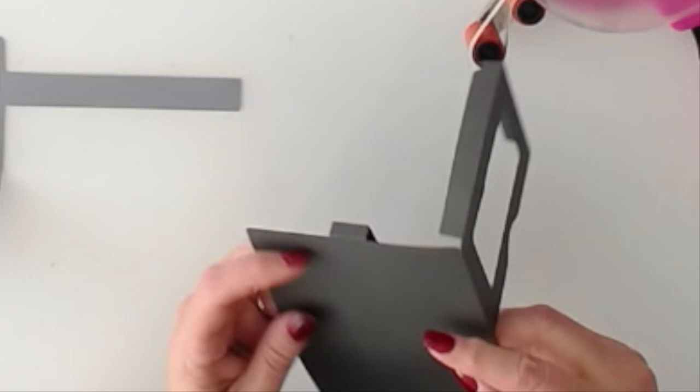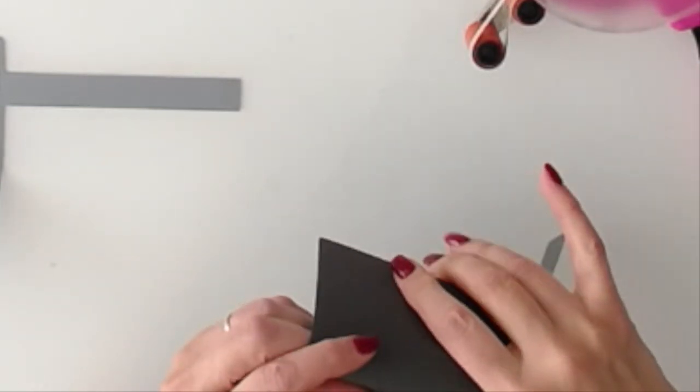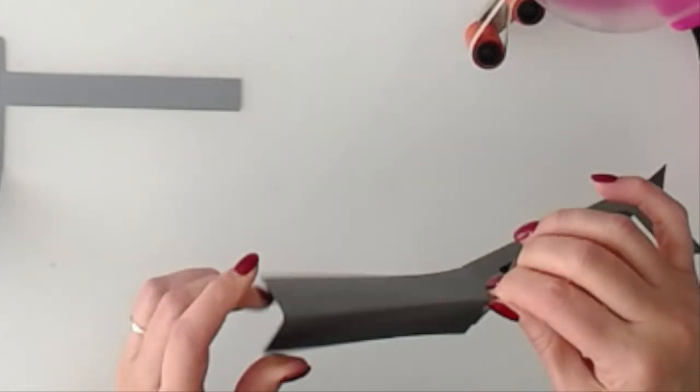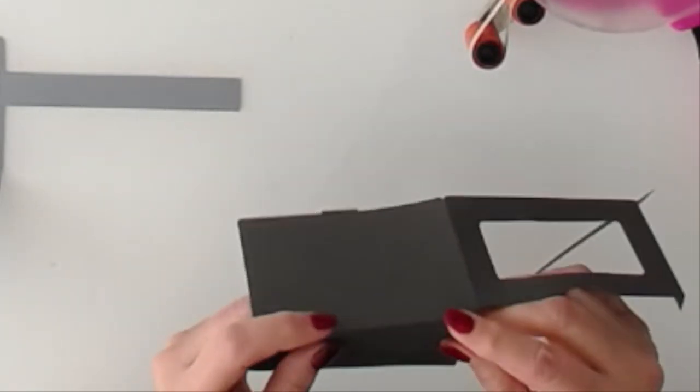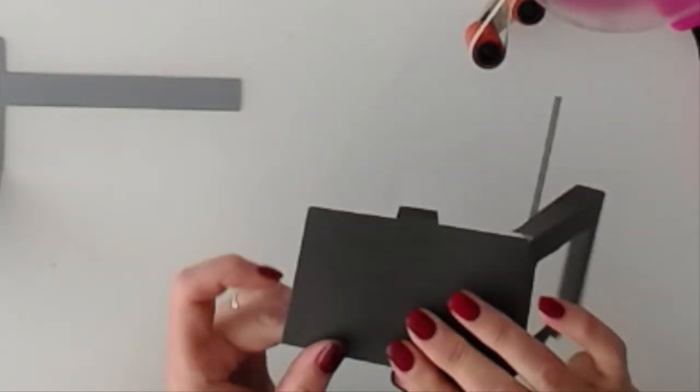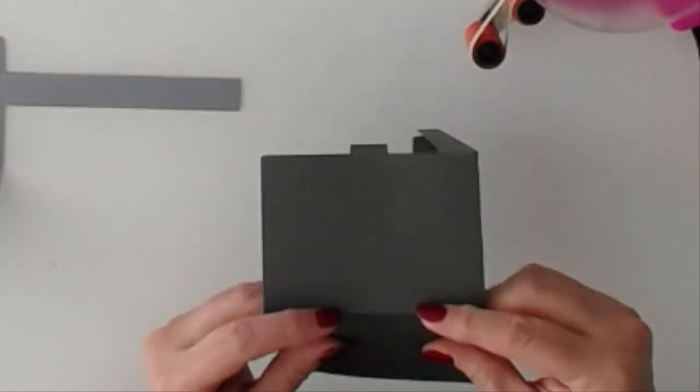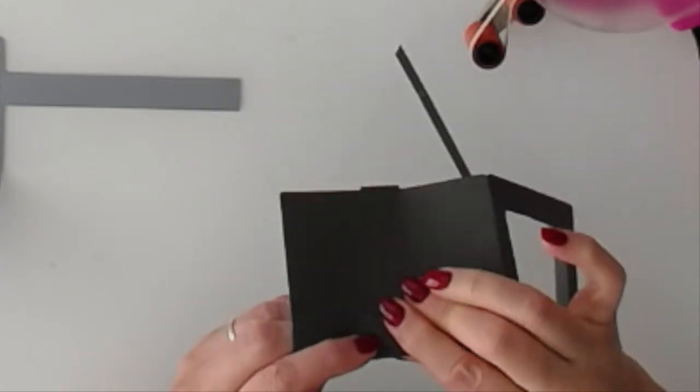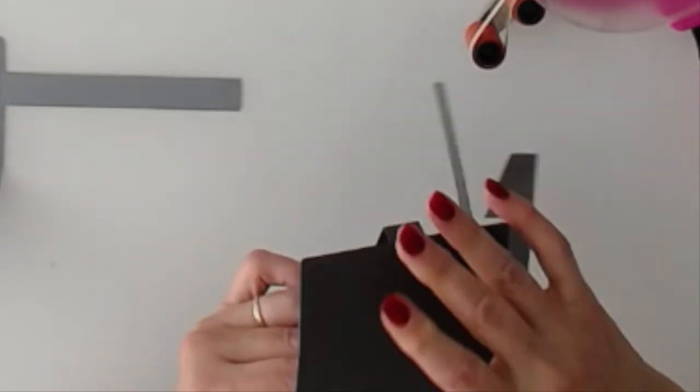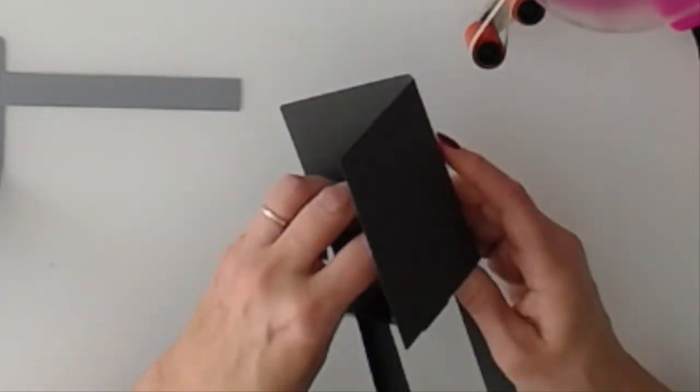And you have a double score line in the center. So you're going to fold that one also. I probably should have done that one first. It doesn't really matter though. Actually, it would be easier to fold if you folded the center one first. There we go.